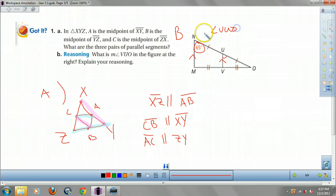So angle VUO, the measure of it, is going to be equal to 65 degrees by, you know, your good old corresponding, corresponding angles on parallel lines are congruent.